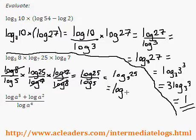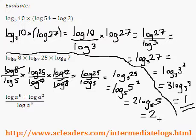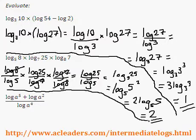And log base 5 of 25 is just 5 squared, of course, so I can actually bring the 2 down. Log base 5 of 5 is just 1, so 2 times 1 equals 2.